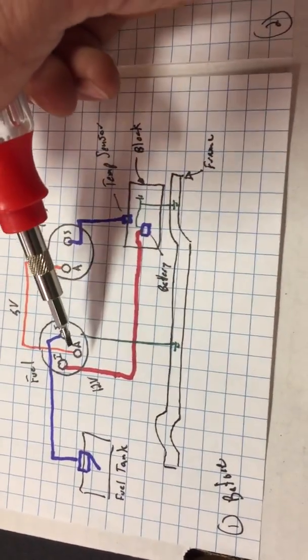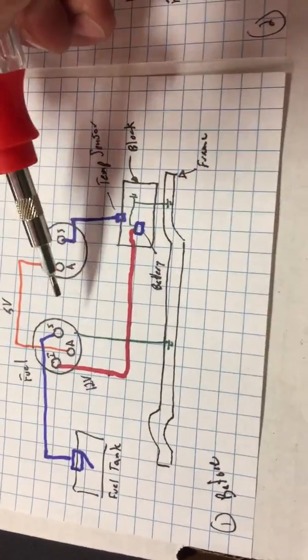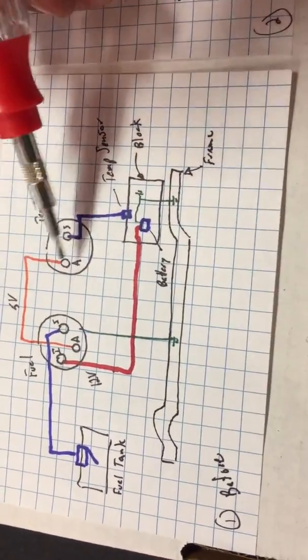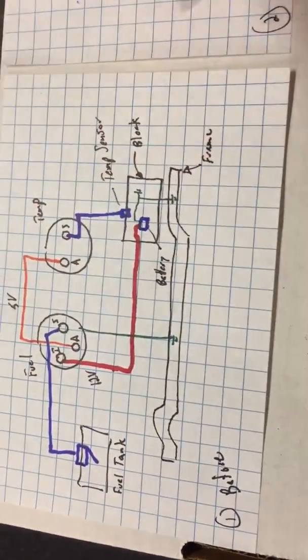This means that if we could just eliminate this 12-volt source and provide just a 5-volt power to point A, it would feed both the fuel gauge and the temperature gauge. So that internal voltage regulator is kind of a point of failure.